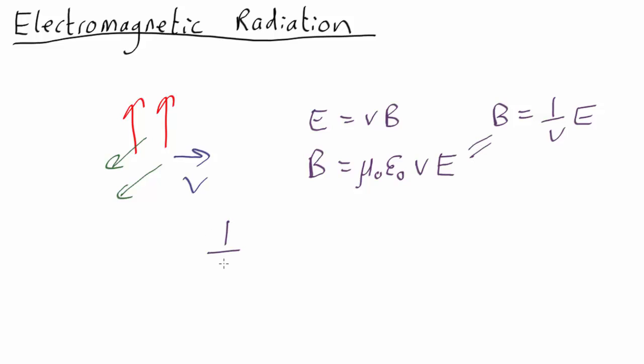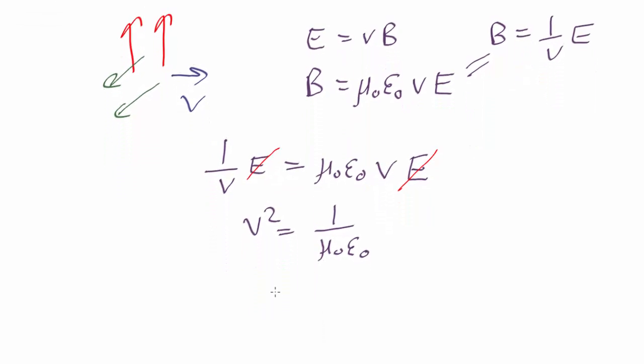So we get 1 over v times the electric field equals μ₀ε₀v times the electric field. So the electric field cancels. And we can rearrange it so that we get v² equals 1 over μ₀ε₀. So v equals 1 over the square root of μ₀ε₀.